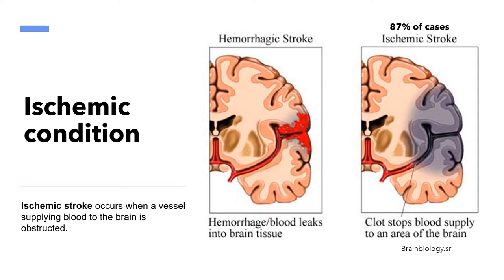These ischemic strokes represent 87% of cases. Hemorrhagic stroke happens when a weak blood vessel bursts and bleeds into the brain. There are also two types of hemorrhagic strokes: intracerebral hemorrhage, a weak blood vessel breaking inside the brain, and subarachnoid hemorrhage, which occurs when a weak blood vessel breaks on the surface of the brain — the difference being inside versus outside.